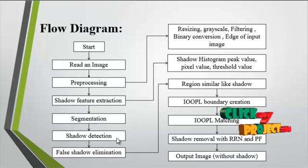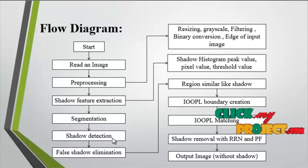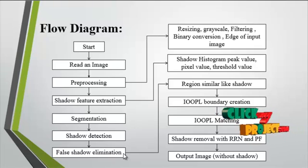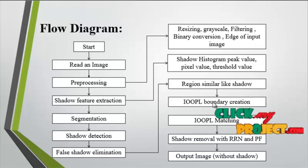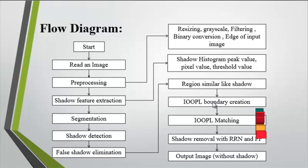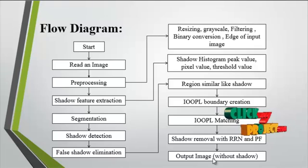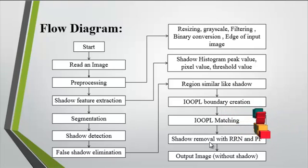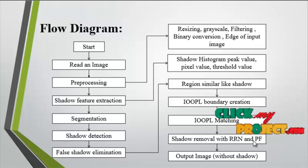The blobs of the segmented shadows are detected for shadow detection. Then false shadow illumination is used to eliminate regions similar to shadow areas. After that, IOPL boundary extraction is undertaken, where the inner and outer layer of the image will be extracted.